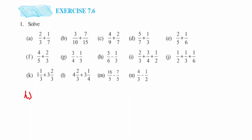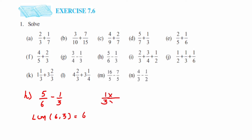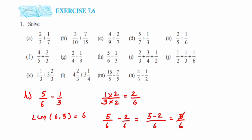Problem H is 5 by 6 minus 1 by 3. Denominators are different, so we take the LCM of 6 and 3, which is 6. Since the first number 5 by 6 already has denominator 6, we only change the second number. For 1 by 3, we multiply by 2 to get 6, giving 2 by 6. So 5 by 6 minus 2 by 6: subtract the numerators, 5 minus 2 is 3, giving 3 by 6. We can cancel: 3 ones are 3 and 3 twos are 6, so the answer is 1 by 2.